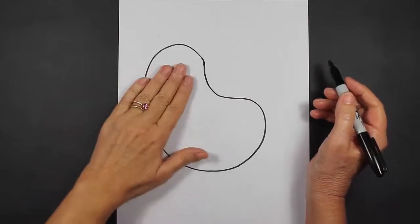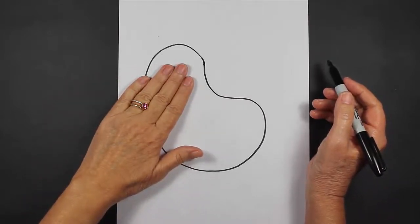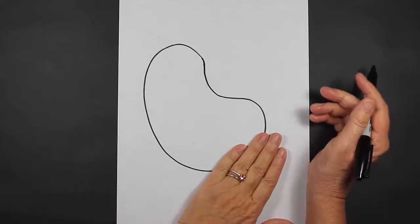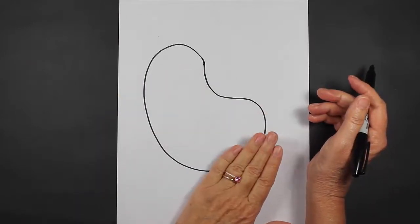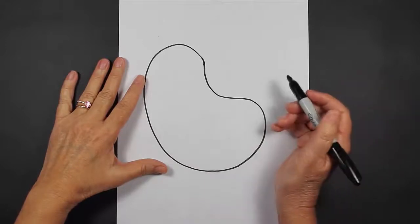All right, so this is going to be our platypus's head, and this is going to be the area where our platypus's tail is going to go, and he's going to be on his back. He's going to be playing on his back.